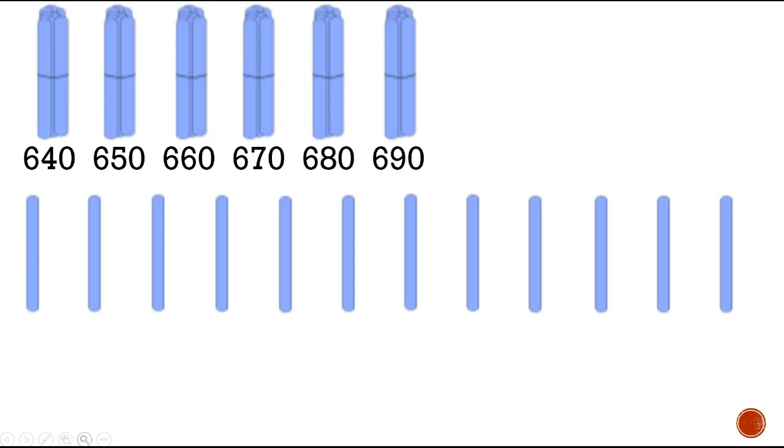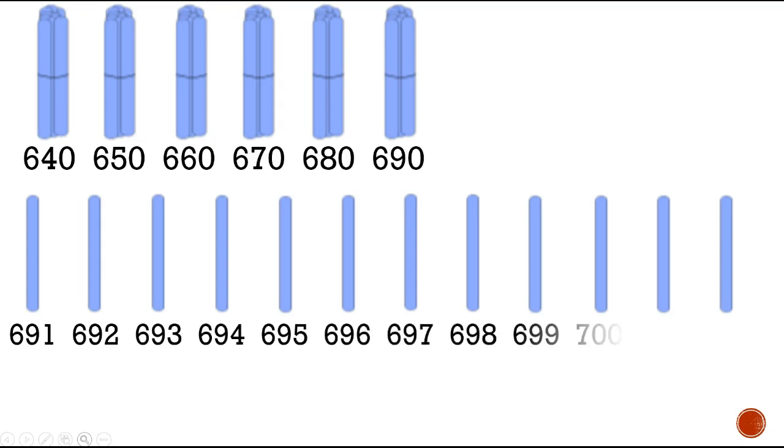Now we're going to 1s, so count by 1s from 690: 691, 692, 693, 694, 695, 696, 697, 698, 699, 700, 701, 702. Whew, that was a lot of counting. Good job.